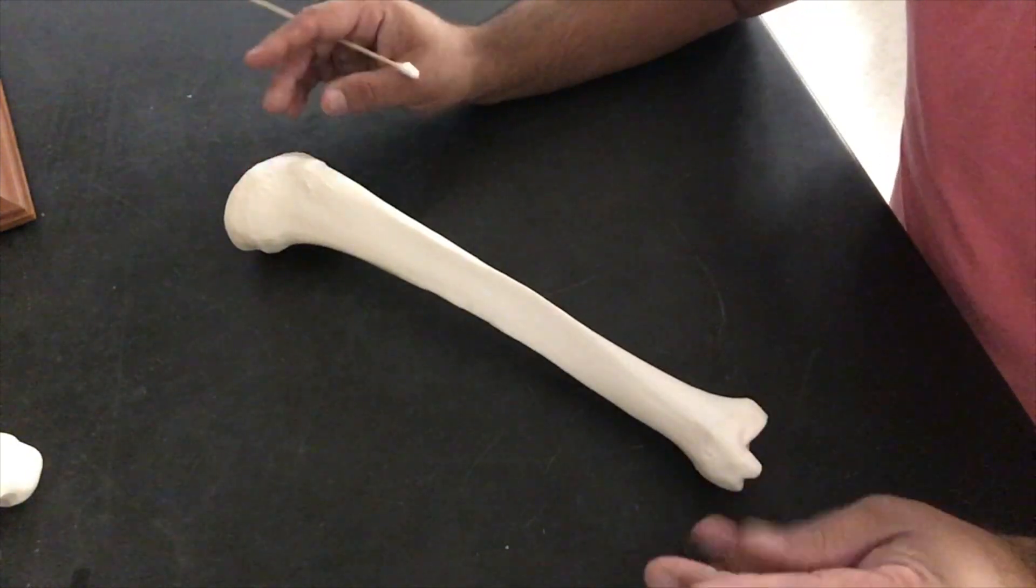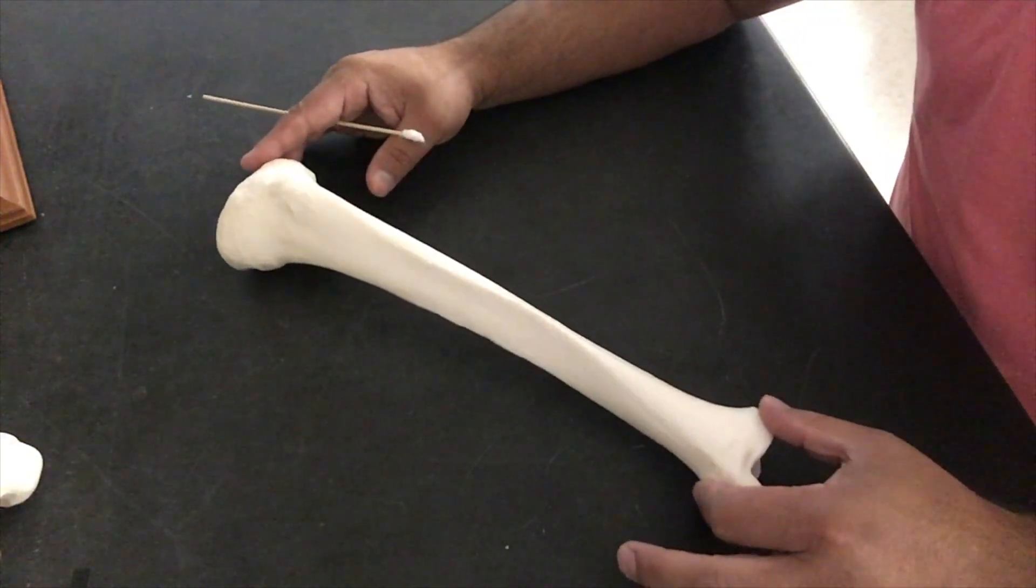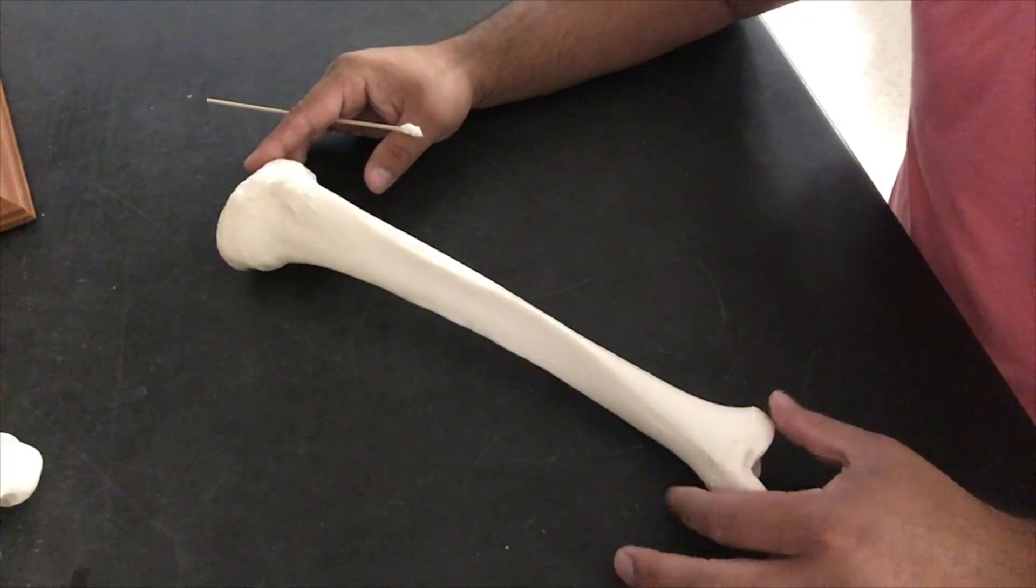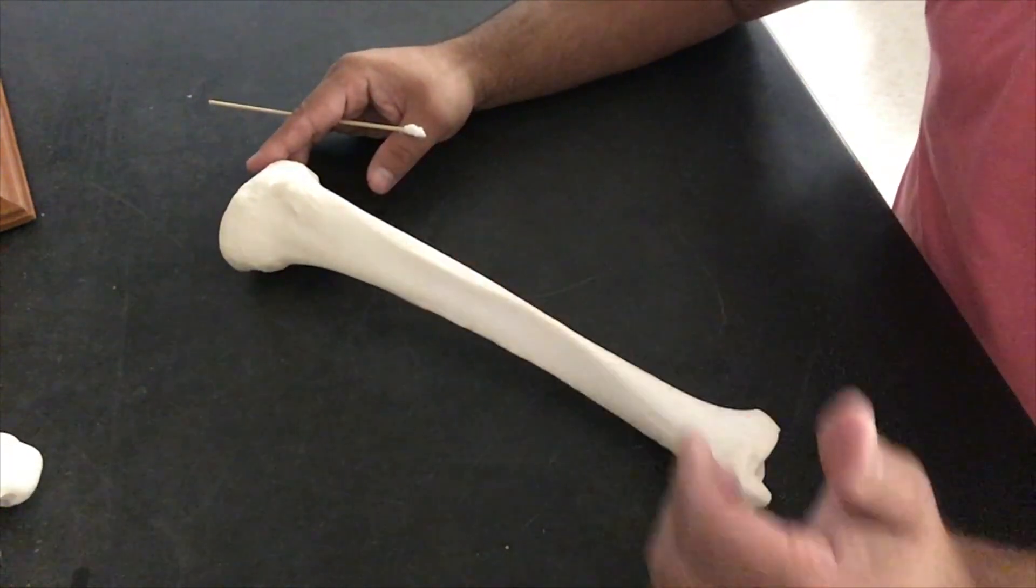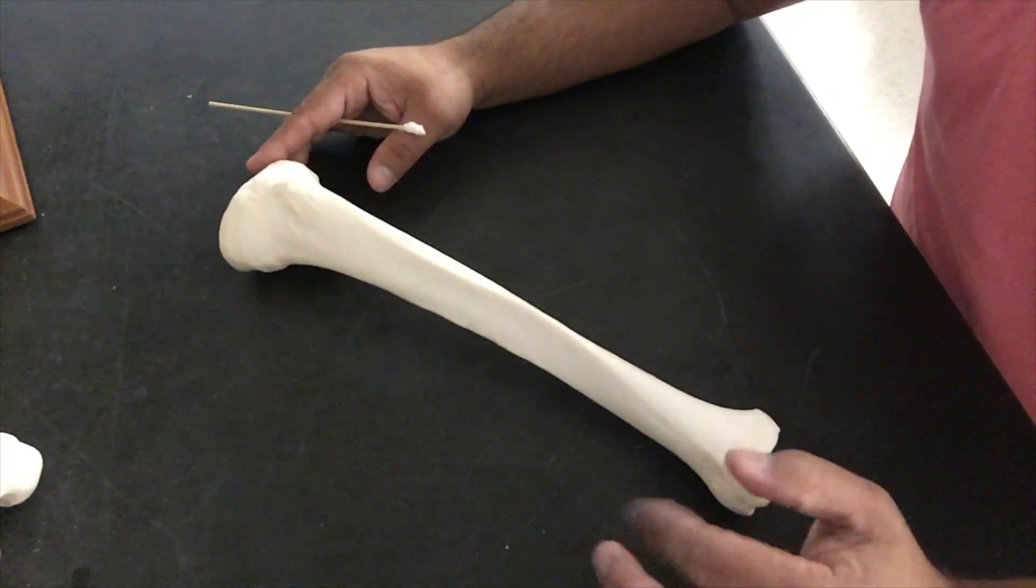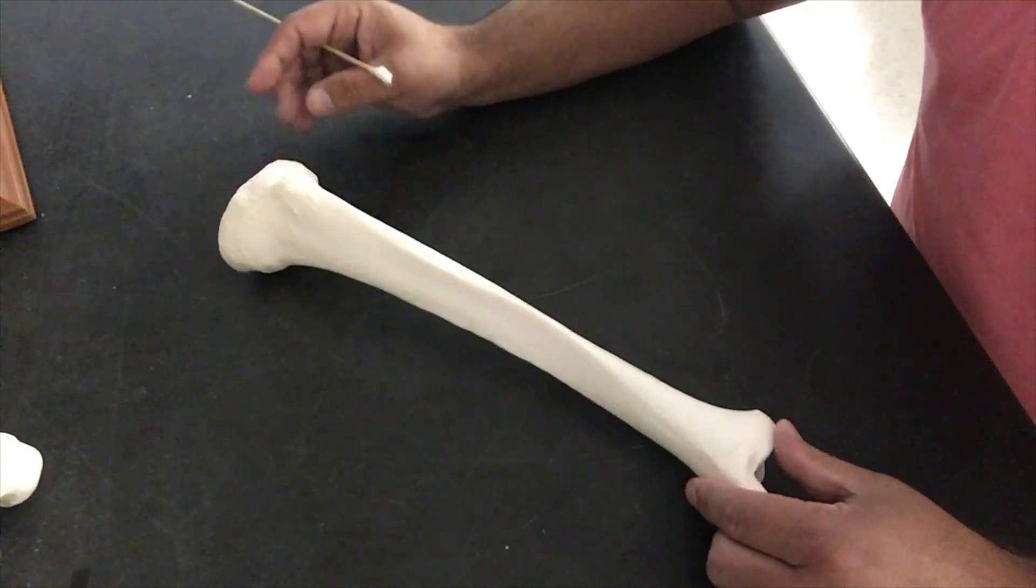So we're going to start with our tibia right here, and I'm going to try to get this whole bone in the frame of view for you, and then we'll zoom into the proximal and the distal ends of this bone and identify some of the landmarks.